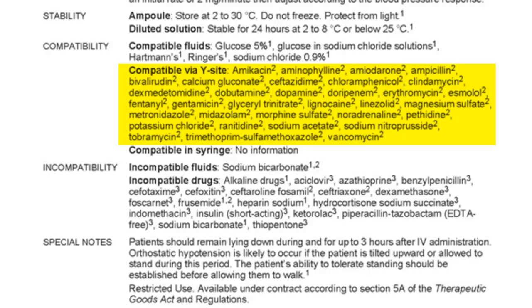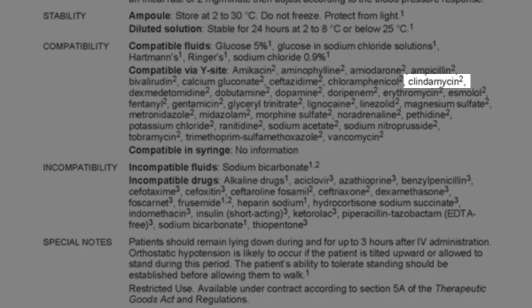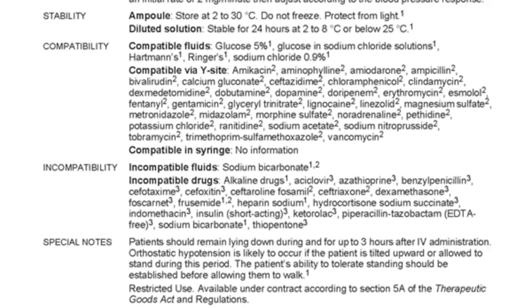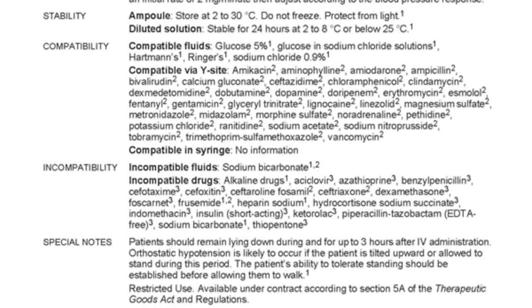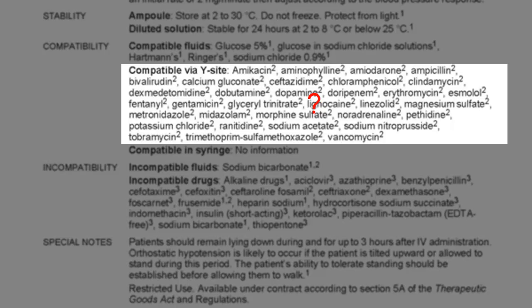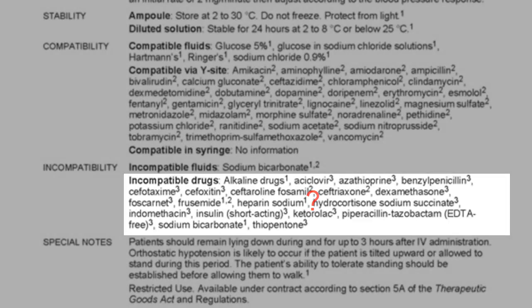The 'compatible via Y-site' section means the medicine can be given with other medicines running through another line. For example, clindamycin is listed as compatible via Y-site with labetalol hydrochloride, while acyclovir is listed as incompatible. If a medicine such as fluconazole is not listed in either the compatible or incompatible sections — even after checking the fluconazole monograph — you cannot assume it is safe and must check with a pharmacist or medicines information service.